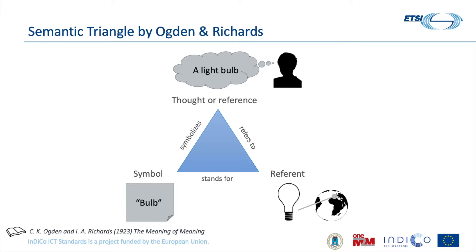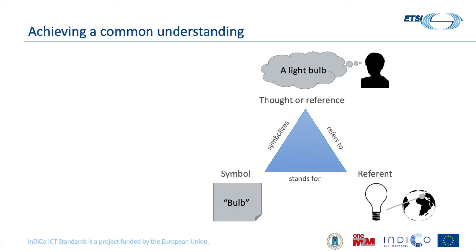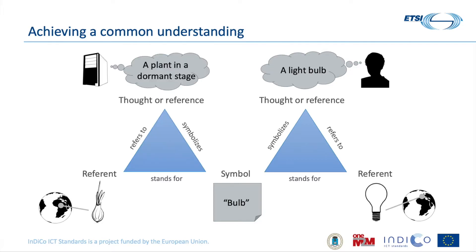And here is the key part: we need to have these symbols in a way that can facilitate communication and interoperability. For this we need that these symbols are as expressive and as informative as possible. Otherwise, using a simple description such as 'bulb', any other actor can take these symbols and understand something entirely different, because we are not giving any context or any semantics to our symbols. And this is one of the goals of knowledge representation.